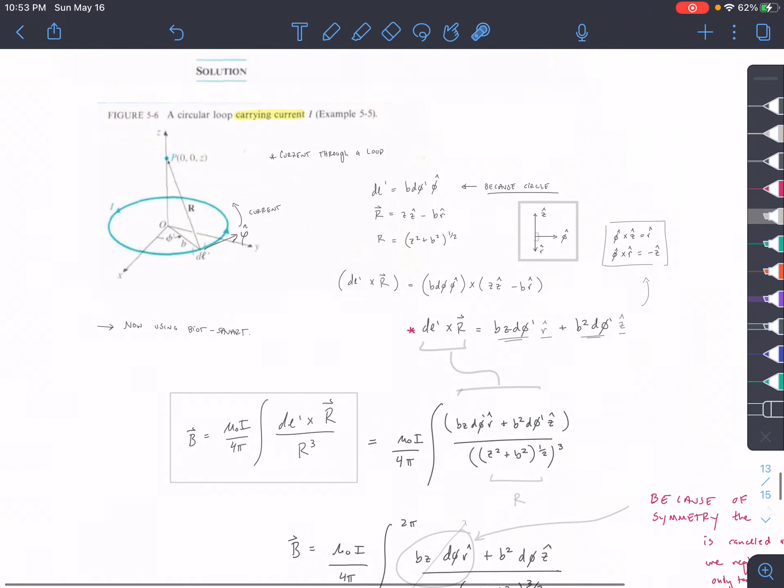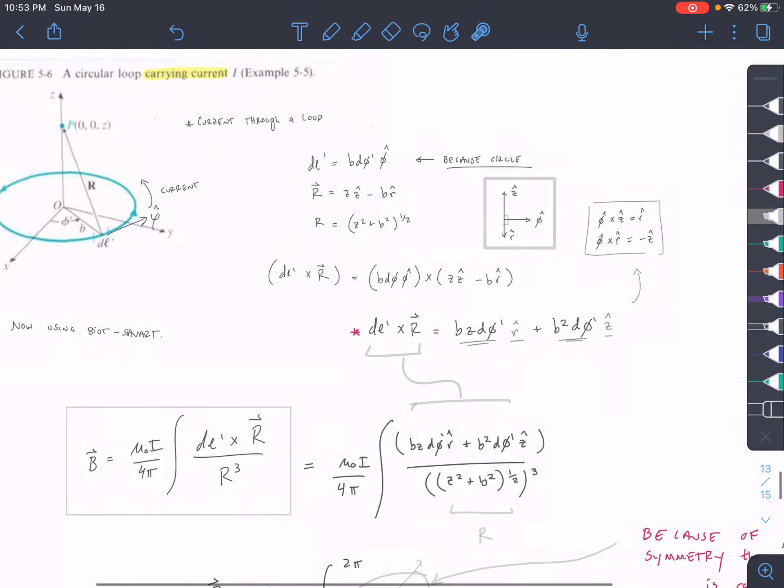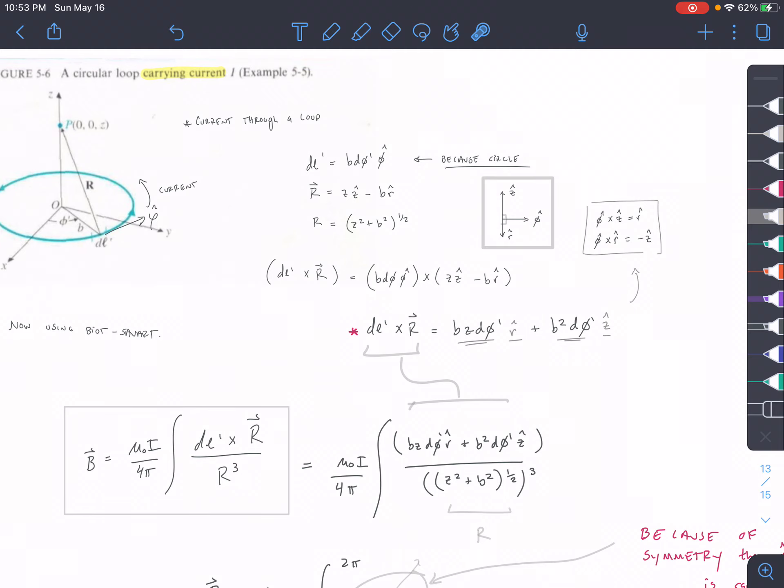So now we are going to combine some of our components. We have dL cross R. So our dL is B d-phi phi-hat cross Z Z-hat minus B R-hat. So really remember your cross-products here. Phi cross Z equals R. If we think about our coordinate system, phi right-hand rule cross Z is going to equal R. And then phi cross R is going to equal negative Z, right? Because our hand would be upside down for this one.